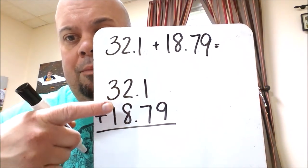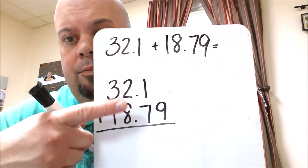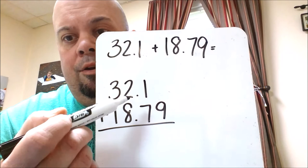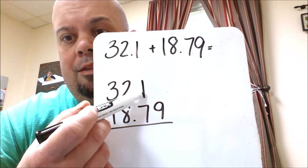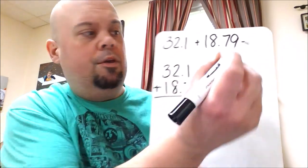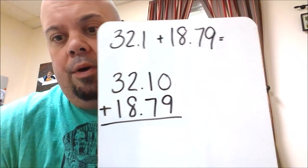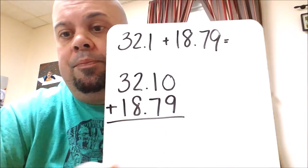So we've got our 32 and 1 tenth. And then I'm lining up tens places, ones places, the decimals, and the tenths. But then our number up here stops at the tenths, doesn't go out to the hundredths. So we would just fill in a 0. So now they both go out to the same place value. And then just add as normal.